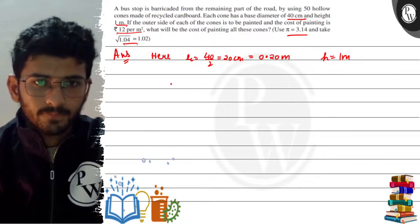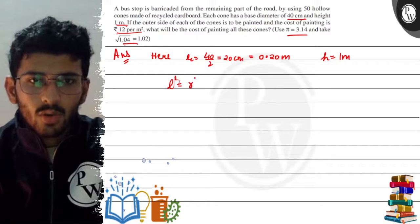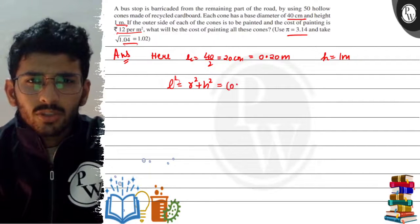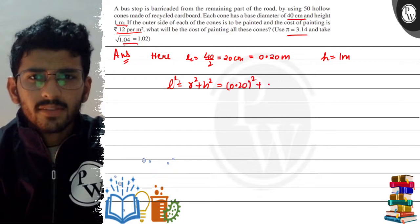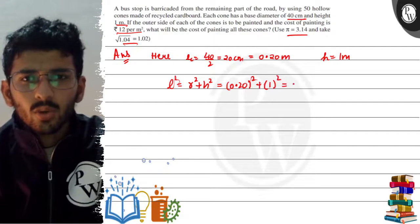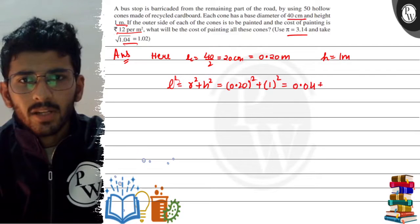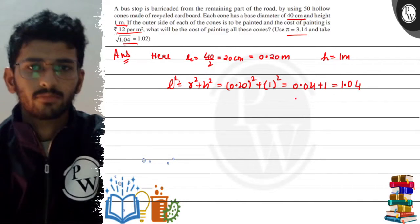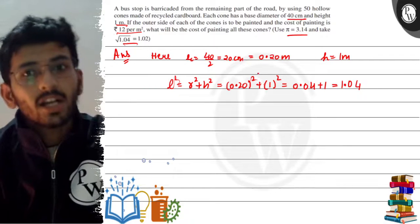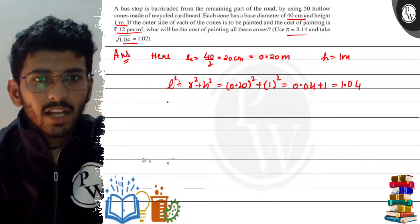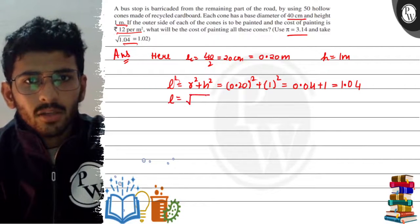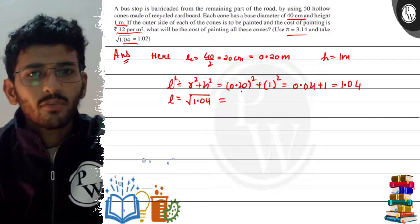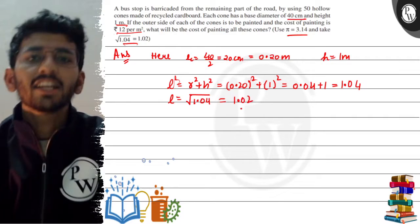In the curved surface area formula πrl, l² = r² + h². So r² means 0.20 squared plus 1 squared, which comes out to be 0.04 plus 1, which is 1.04. If l² is 1.04, then l will be root of 1.04. The value of this is already given as 1.02, so l is found.